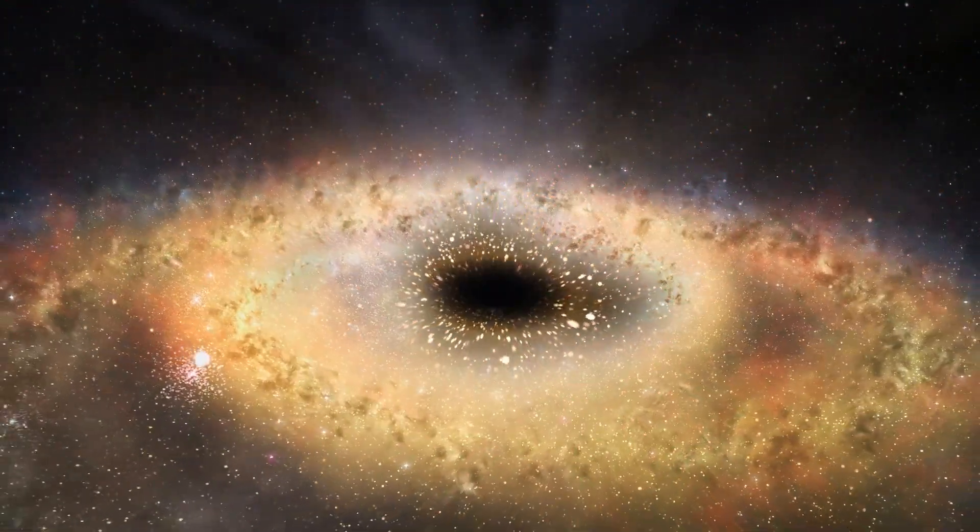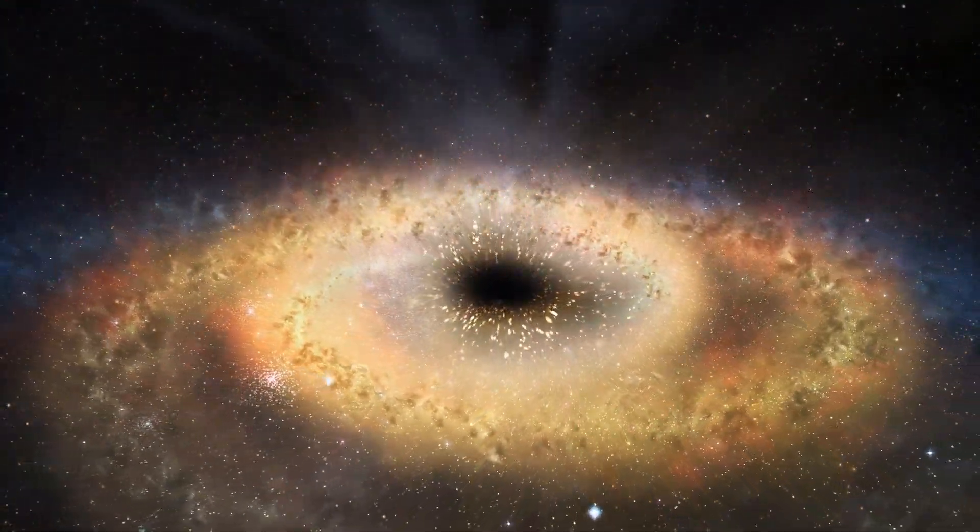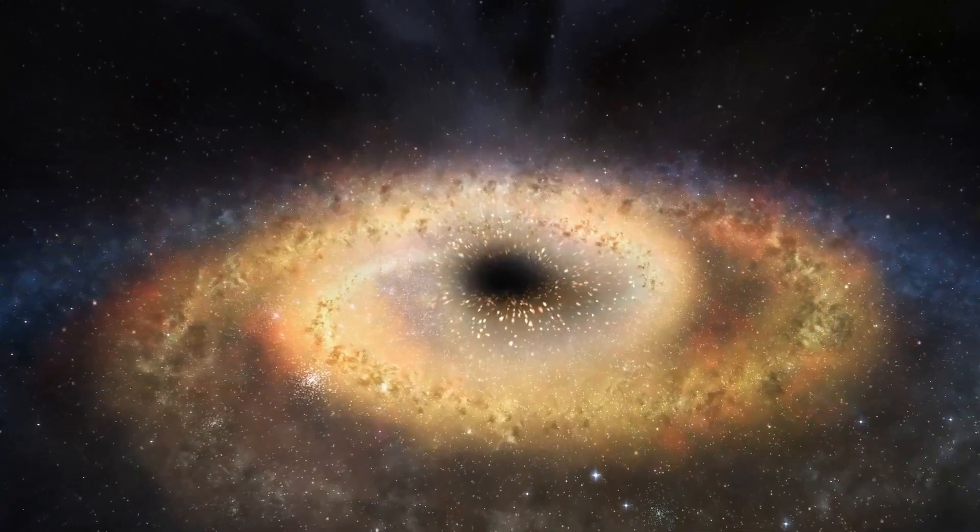When you look at a giant star that has died, you see a collapsed core that has turned into unlimited space. That piece of space is the same thing we call a black hole.